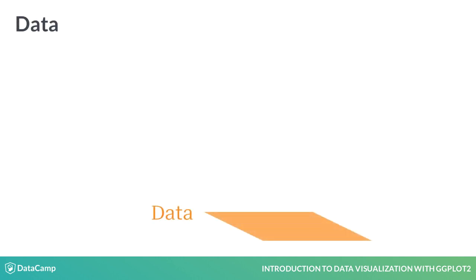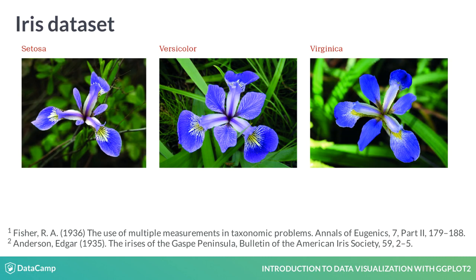The bottom layer is the data element. Obviously, we need some data to plot. I'm going to use several different datasets in the course videos, one of which is the classic iris dataset collected by Edgar Anderson in the 1930s and thereafter popularized by Ronald Fisher. The dataset contains information on three iris species: Setosa, Versicolor, and Virginica. Four measurements were taken from each plant — the petal length and width, and the sepal length and width.